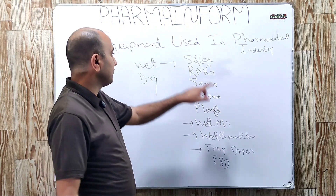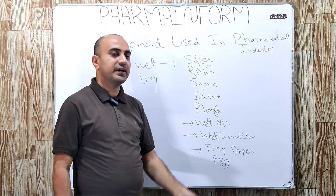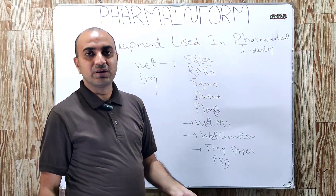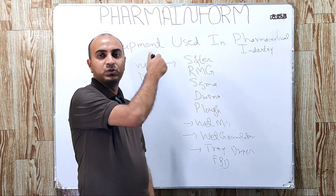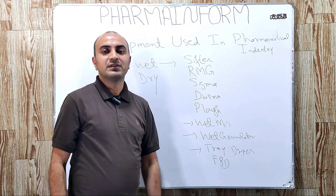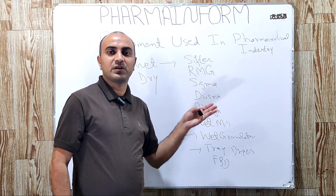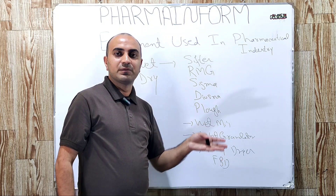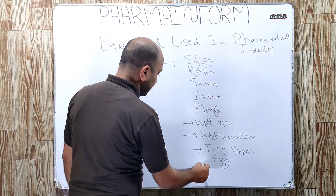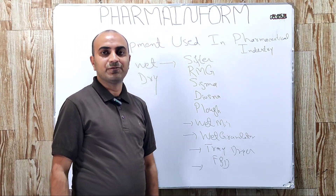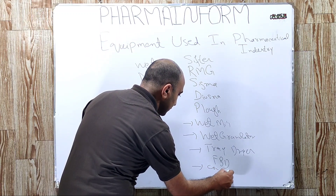If you are not familiar with the RMG or fluid bed dryer, links to those videos are given in the description. If you want to learn the details of the complete granulation process, the wet granulation and dry granulation playlist links are also given in the description. After drying, the next step is screening or dry sieving. For screening or dry sieving, we use a co-mill or oscillating granulator.